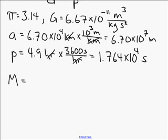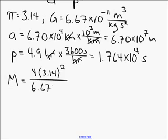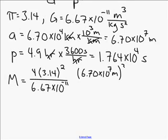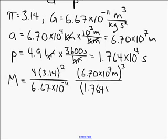So the mass is going to equal 4 times 3.14 squared divided by 6.67 times 10 to the minus 11. And then we have a cubed of 6.70 times 10 to the 7 meters cubed divided by p squared, 1.764 times 10 to the 4 seconds. That's going to be squared. And I should write my units over here. Meters cubed per kilogram seconds squared.